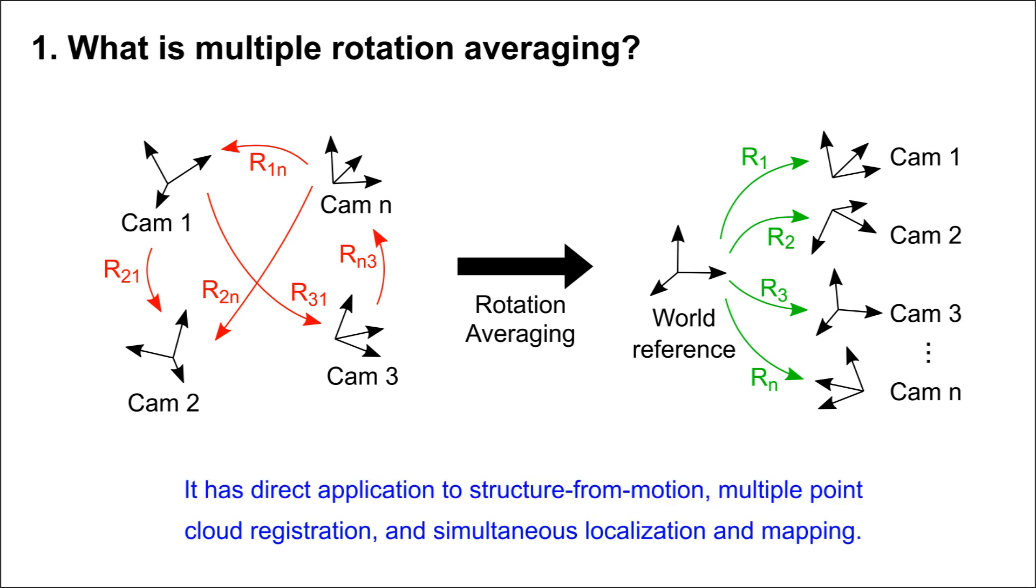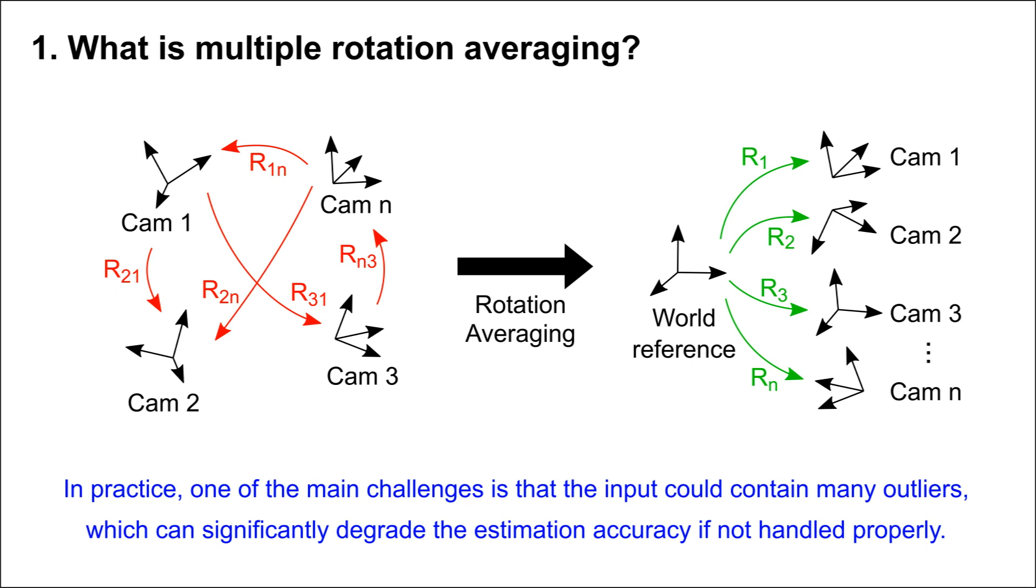It has direct application to structure from motion, multiple point cloud registration, and simultaneous localization and mapping. In practice, one of the main challenges is that the input could contain many outliers, which can significantly degrade the estimation accuracy if not handled properly.